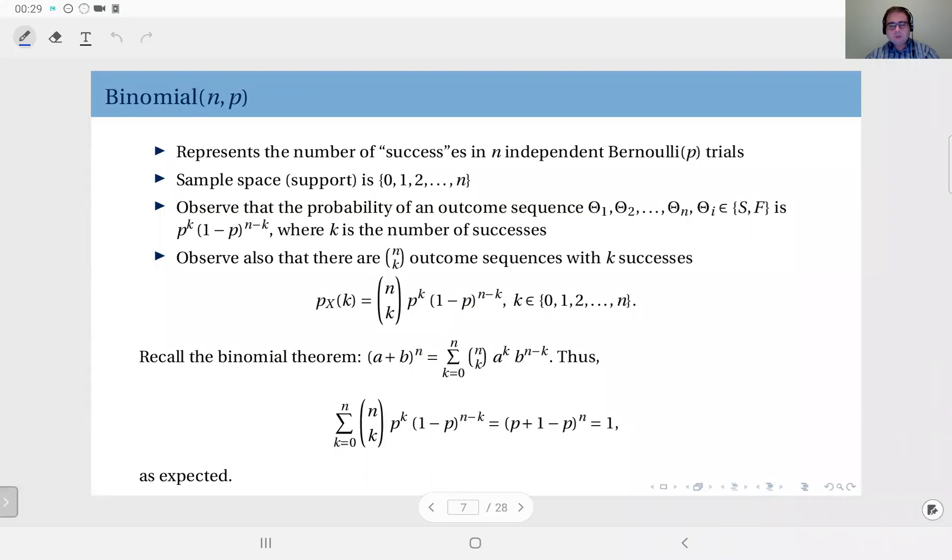Next, the distribution we are going to talk about is the binomial distribution. Here we have two parameters, n and p. Binomial distribution represents the number of successes in n independent Bernoulli p trials. So this p here is this p, and this n here is this n here. You perform n independent Bernoulli p trials.